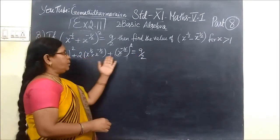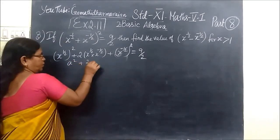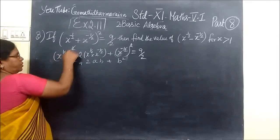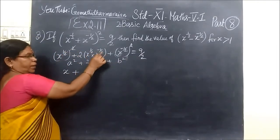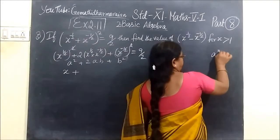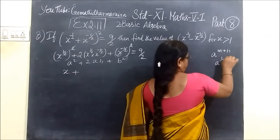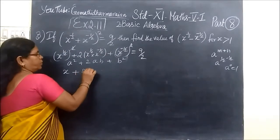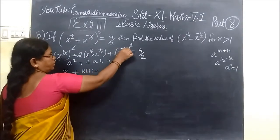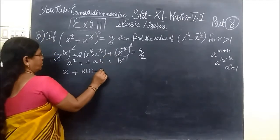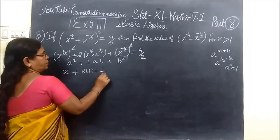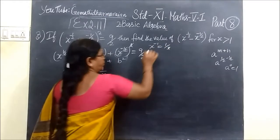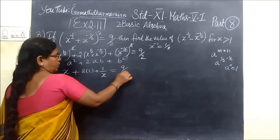So a² + 2ab + b² — this is of that form. You can write x^(1/2) · x^(-1/2) using the rule a^m · a^n = a^(m+n), giving a^0 = 1. So 2 times 1 plus b² equals 9/2. x^(-1) is nothing but 1/x.